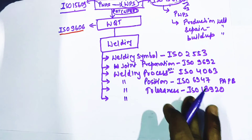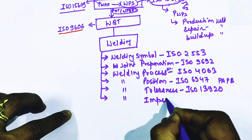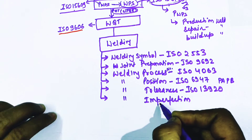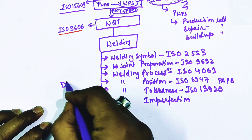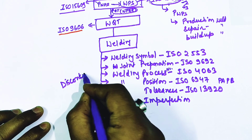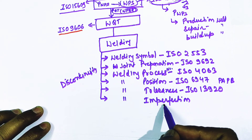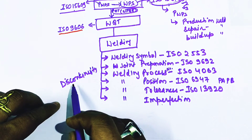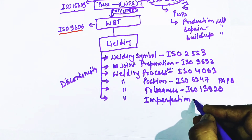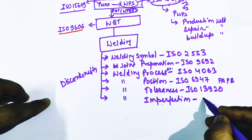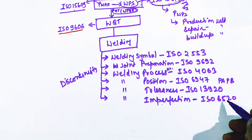The next code is for imperfection — welding imperfection. In ISO, the term 'discontinuity' is generally not used; they write 'imperfection' instead. Imperfection and discontinuity are the same thing. The code number for welding imperfection classification is ISO 6520.